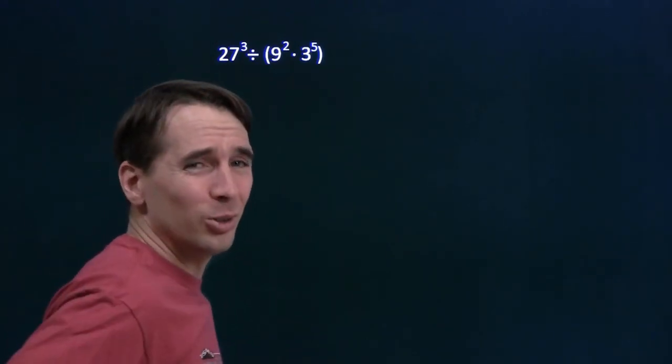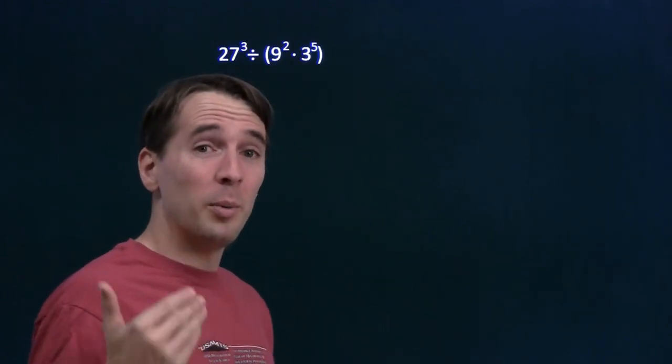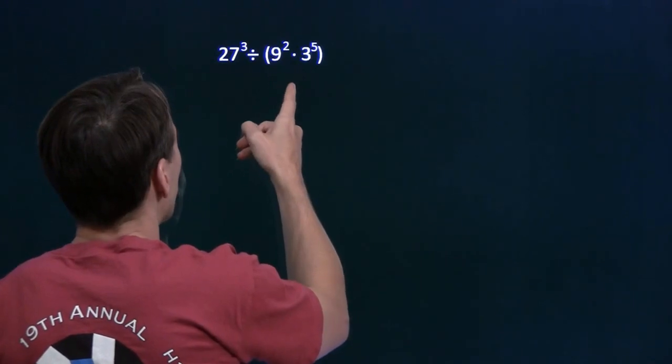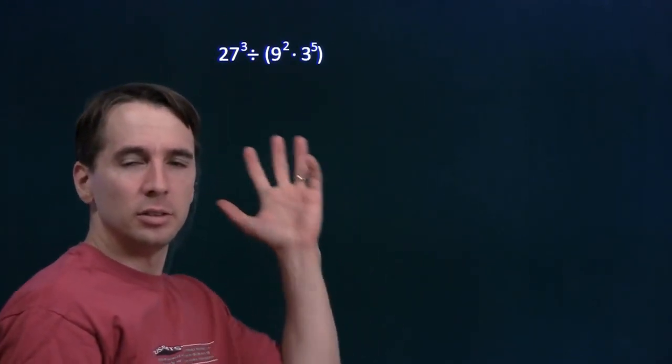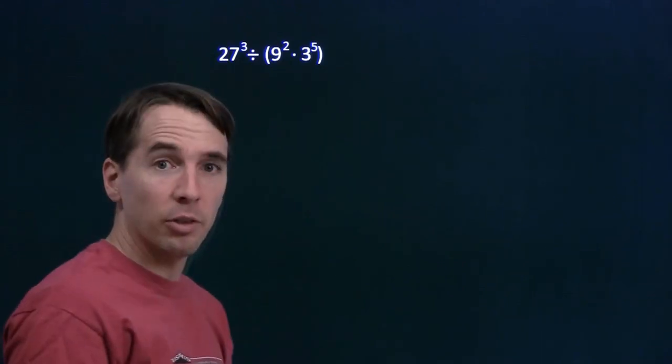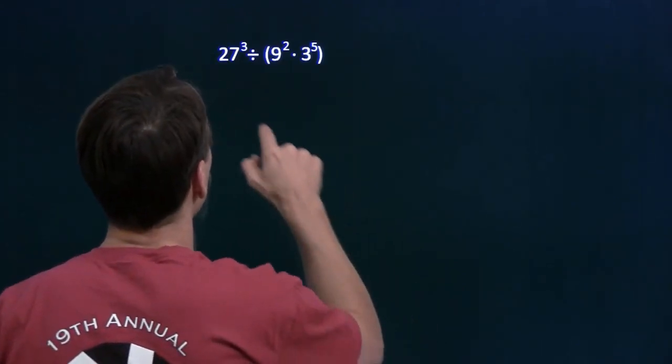When I see a problem I don't know how to do, one thing I like to do is try to turn it into a problem I do know how to do. So when I look at this, I see 3, 9, and 27. These are all powers of 3. So I can write each of these as a power of 3, so then all the bases will be 3, and then I can use my same base exponent rules.